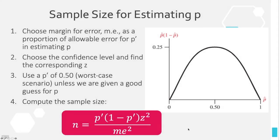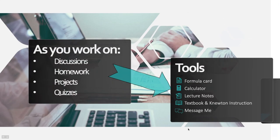That covers the first half of chapter eight — the proportions half. You may begin to understand why this is a challenging chapter, but hopefully it's also rewarding. Use your formula card, especially the calculator column, because the calculator saves time and improves accuracy on quizzes and exams. Saving time on this large chapter is very important.